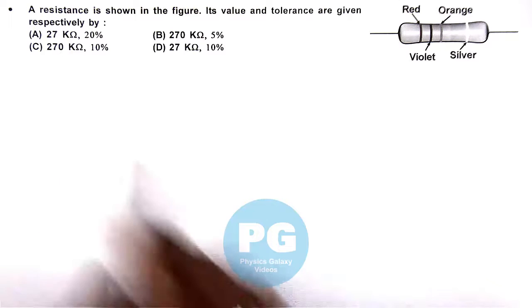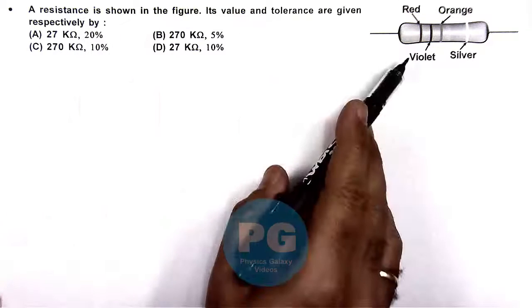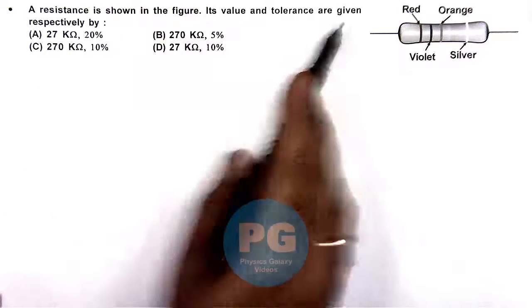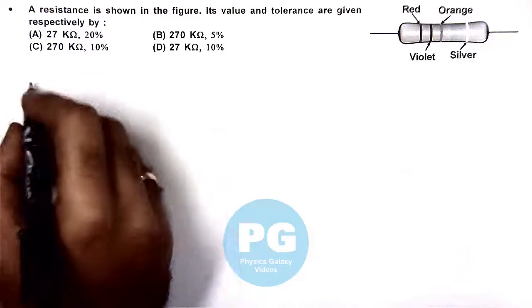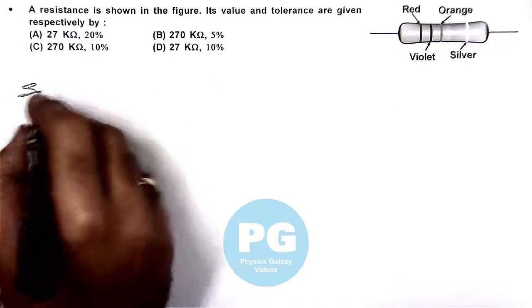In this question, a resistance is shown in the figure and its value and tolerance are given. We are required to calculate by using the color coding of the resistances.